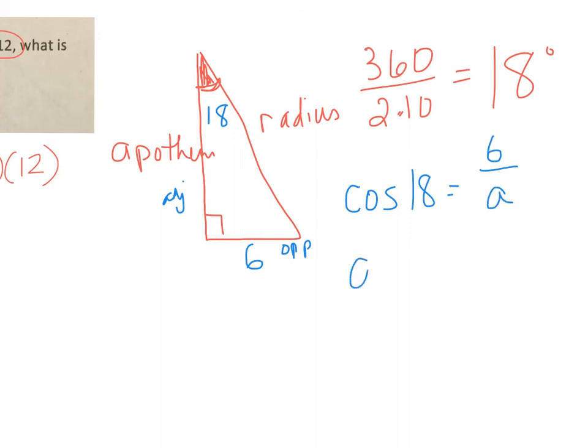When we have a variable in the denominator, we end up dividing. So the apothem is half of the side length divided by the cosine. When I type this into my calculator, 6 divided by cosine 18, I get an apothem length of approximately 6.30877.